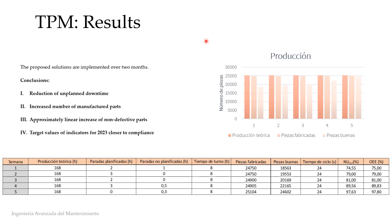After two months of implementing the solutions, we can see a substantial reduction in unplanned downtime, an increase in the number of parts produced close to the maximum capacity of the machine, and an approximately linear reduction in defective parts. In the last week of the study, less than 2% of the target value set by the company are still to be reached. It is expected that in the following weeks production will progressively become more stable with a higher quantity of good parts, but the focus should also be on reducing planned maintenance stoppages when this stability is reached.